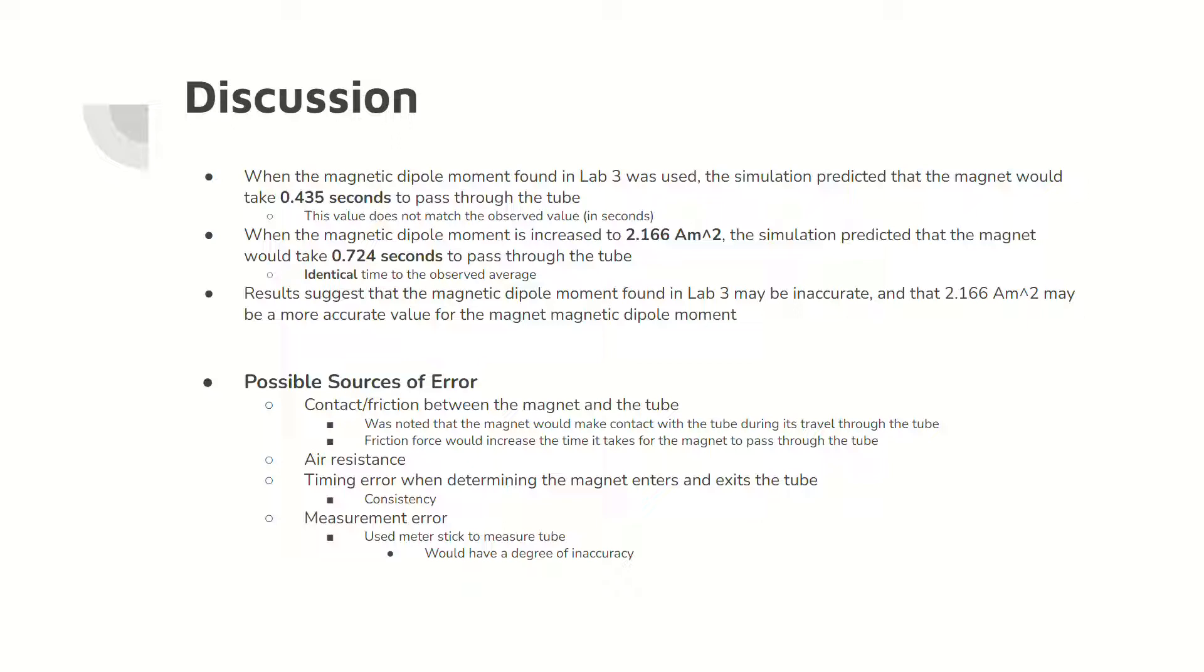Possible sources of error include the presence of contact and friction between the tube and the magnet as the magnet falls, which would result in a slower speed, not accounting for air resistance in both models, timing errors when determining when the magnet enters and exits the tube, and measurement errors from the limited degree of precision in the meter stick.